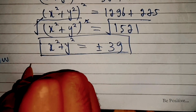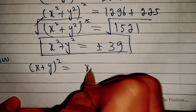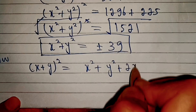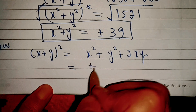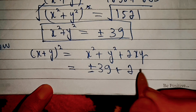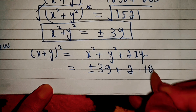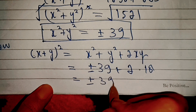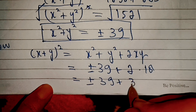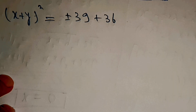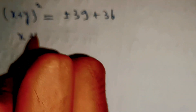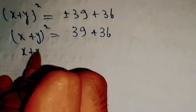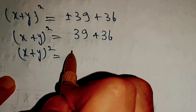Now we know that (x plus y) squared equals x squared plus y squared plus 2xy. So (x plus y) squared equals 39 plus 2 times 18. Since we will only consider the real solution, we do not take the negative value. So (x plus y) squared equals 39 plus 36, which equals 75.